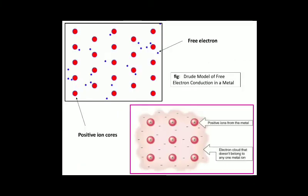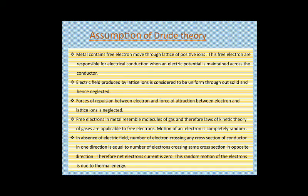This is the Drude model of free electron conduction in metals. In the diagram, red dots represent fixed ions and blue dots are free electrons.